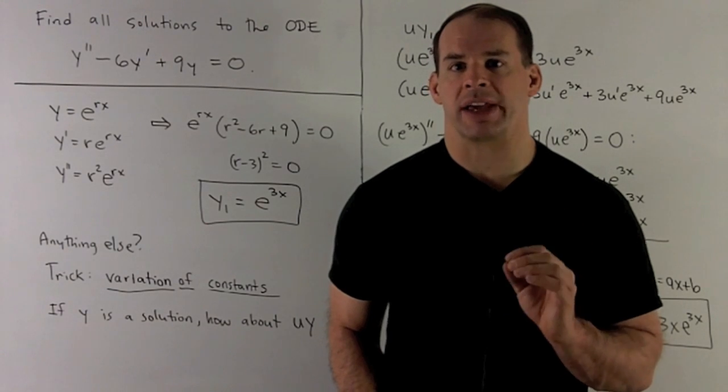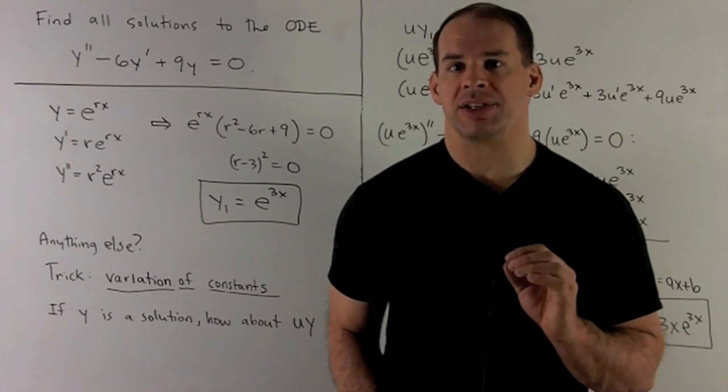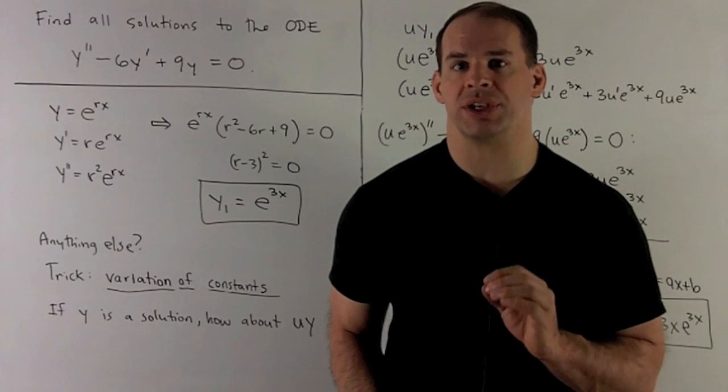Find all solutions to the second order linear ODE: y double prime minus 6y prime plus 9y equals zero.